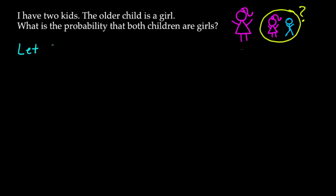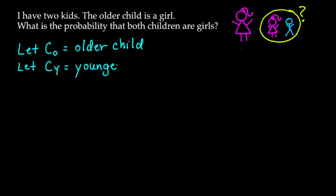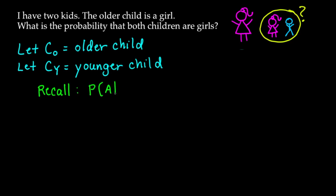I'm going to run through this problem again using set notation and conditional probability definitions because I think it'll make the next two problems make a lot more sense. We have another video posted where we explain all of the set notation, but I'll give a crash course right now. The probability of A given B — the 'given' being the line between A and B — equals the probability of A intersect B divided by the probability of B.